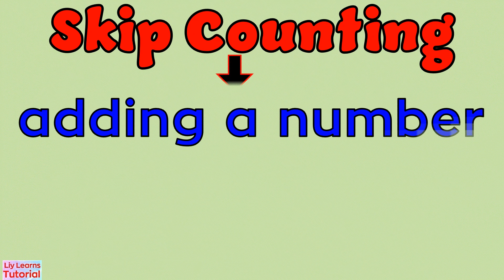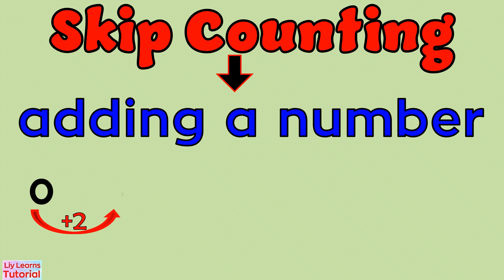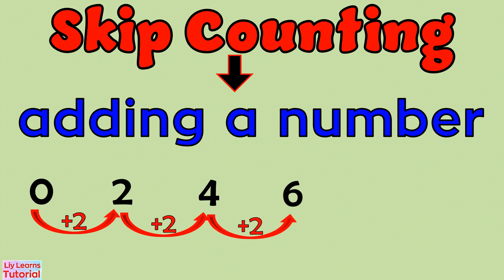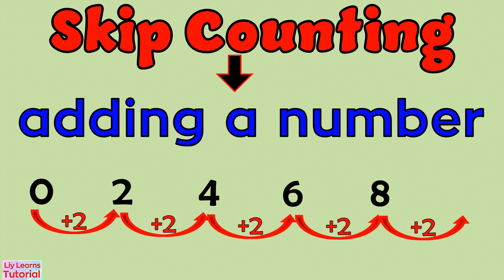When we use addition, we add a number to the previous number. For example, 0 plus 2 equals 2. Plus 2 is 4. Plus 2 is 6. Plus 2 is 8. Plus 2 is 10. And so on. We do this in skip counting by 2.